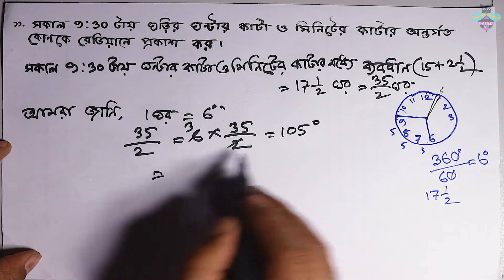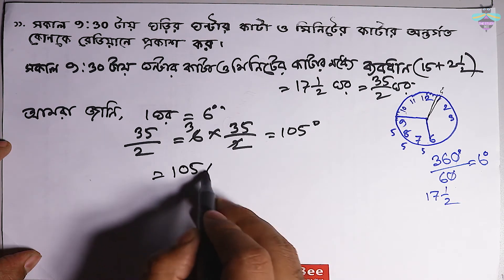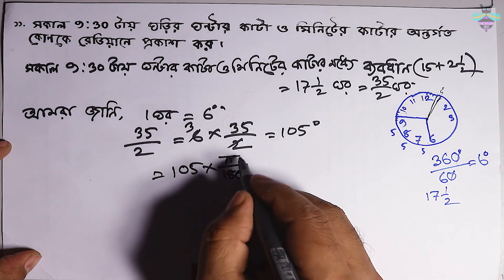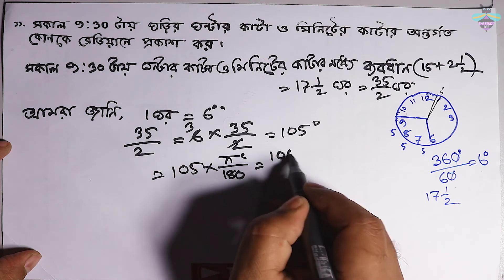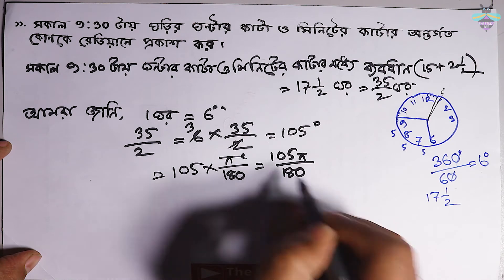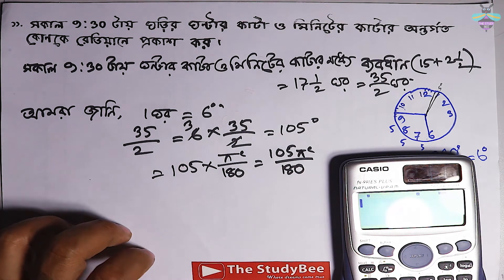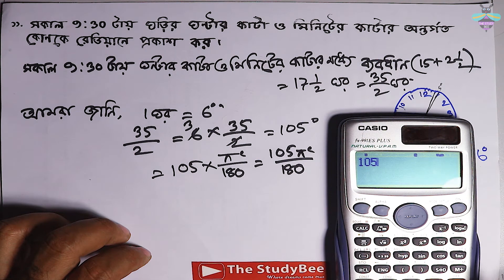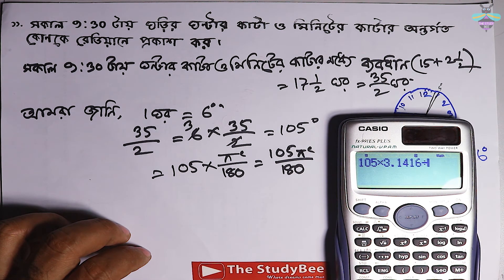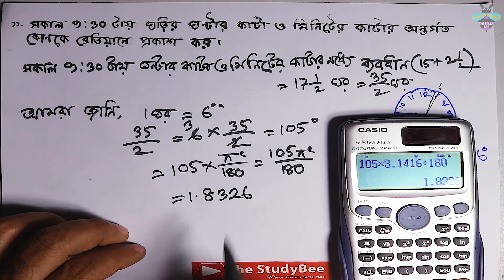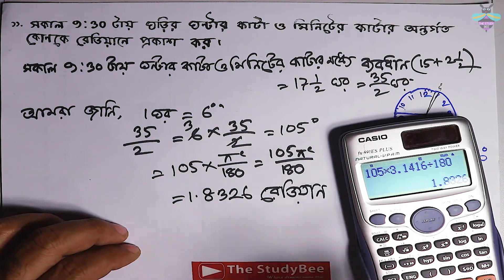105 ডিগ্রিকে রেডিয়ানে নিতা হবে। তার মানে 105 গুণে রেডিয়ানের মান হচ্ছে 105 গুণে 3.1416 ডিবাই 180, তাহলে এটার মান হয় 1.8326 রেডিয়ান।